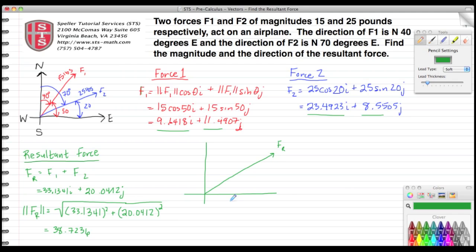The i component is 33.1341, and I know that was a horizontal component. Now the vertical component, the j component, I know that is 20.0412. I know the angle created in here is theta. So I know that if I take the tangent, 20.0412 divided by 33.1341.